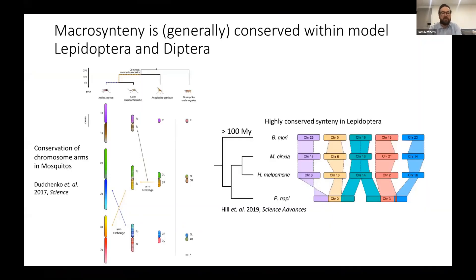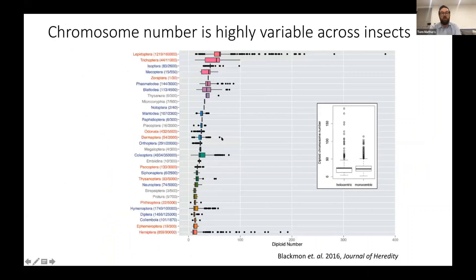Most of what we know about insect genome structure and evolution is based on studies of model Lepidoptera and Diptera, which are typified by very high levels of synteny — for example, in mosquitoes, whole chromosome arms are conserved over around 150 million years of evolution. However, across insects as a whole, chromosome number is actually highly variable. By just focusing on these few model systems, we're really missing the great diversity of chromosome evolution across insects. Within Hemiptera, chromosome number can vary from a diploid number of 2 to 192.